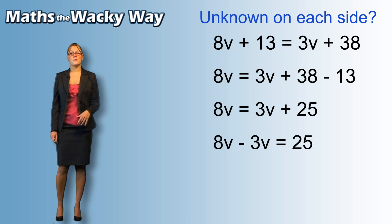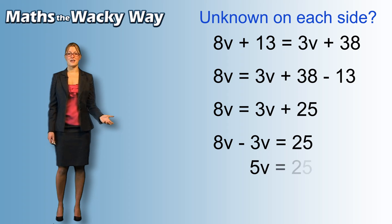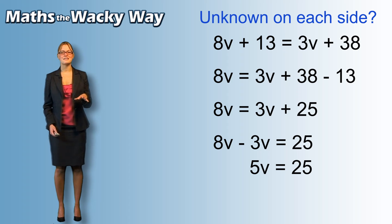Now, if we tidy that up, we have 8v take away 3v. Well, that's 5v. Equals 25 because we've tidied that up already. And hopefully, you can see that we're back to something that we're used to.